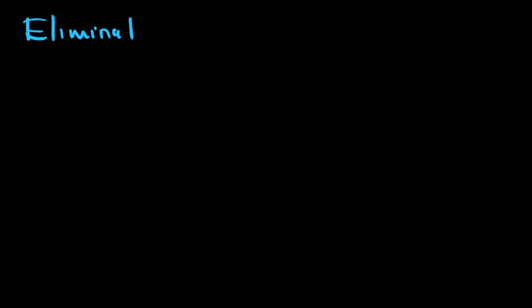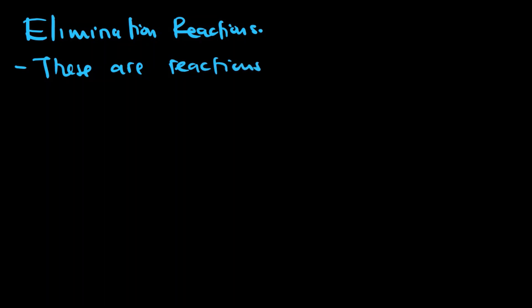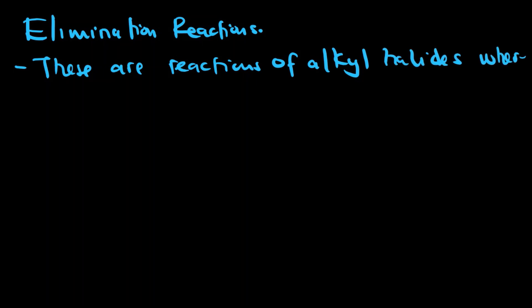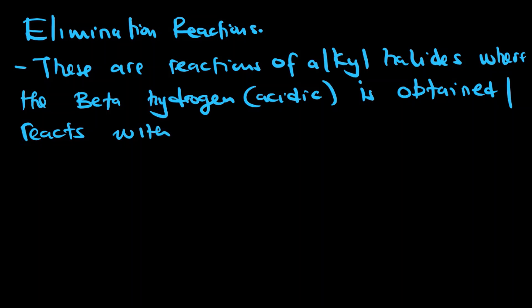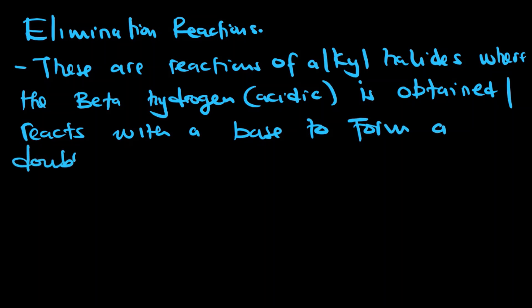So what are elimination reactions? Elimination reactions are reactions of alkyl halides where the beta hydrogen, which is acidic, is grabbed by a base to form a double bond.